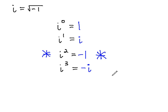These are the four cyclic exponents on i that we need to be able to recognize. i to the zero is equal to 1, i to the first is just i, i squared is negative 1, that's the big important one, and i cubed is the same as negative i. In this way, we can simplify the exponents on i to some expression without any exponents.